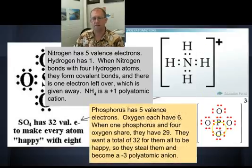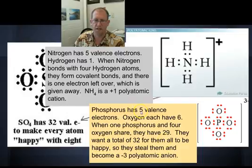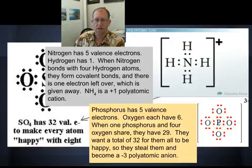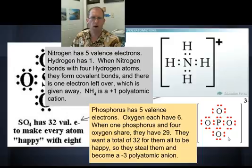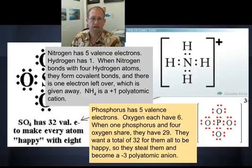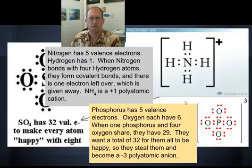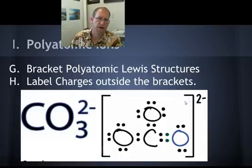One more example — this is phosphate. Each phosphorus has five valence electrons; each oxygen has six. Six times four is 24, plus five is 29. But in order to draw this and have it all be happy, we need 32. So they've stolen three electrons from their environment and wind up with a negative three charge. PO4 is a negative three polyatomic. Polyatomics are just covalent molecules that have stolen from their environment to be happy, and now they have a charge.